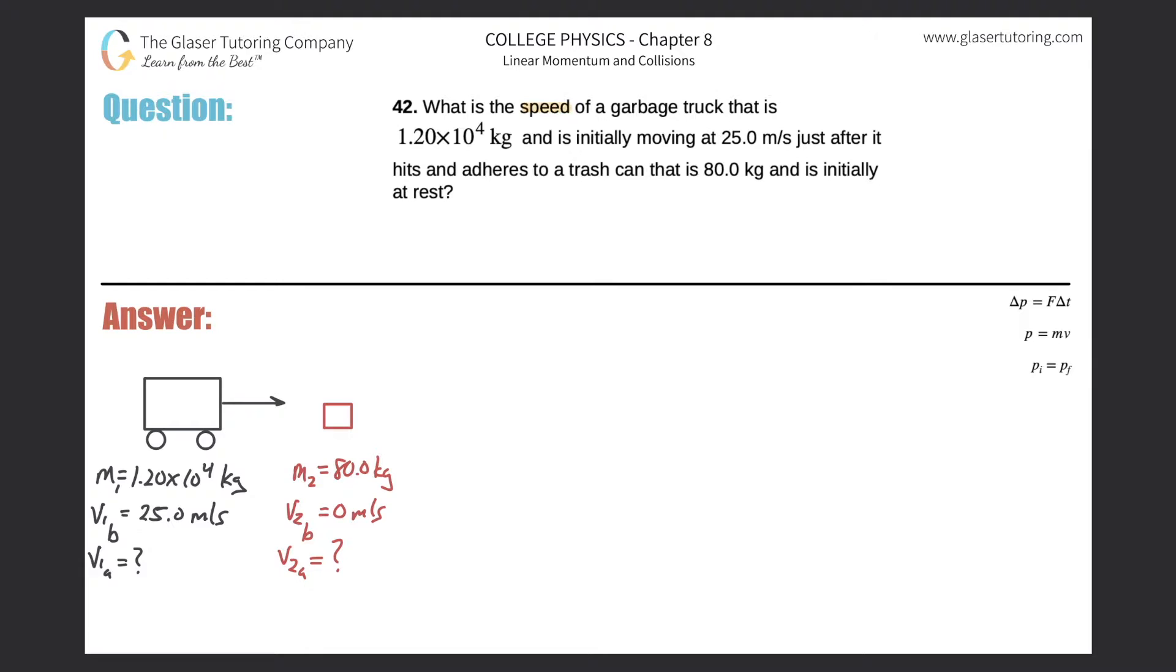Number 42, what is the speed of a garbage truck that is 1.2 times 10 to the 4th kilograms and is initially moving at 25 meters per second just after it hits and adheres to a trash can that is 80 kilograms and is initially at rest?